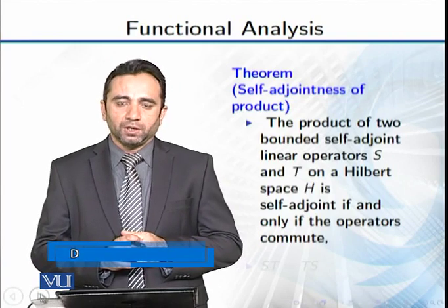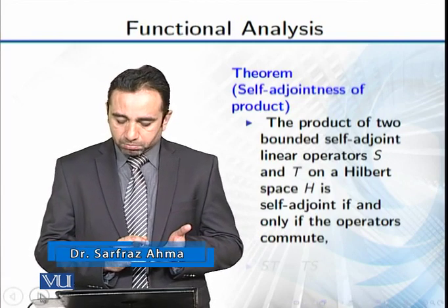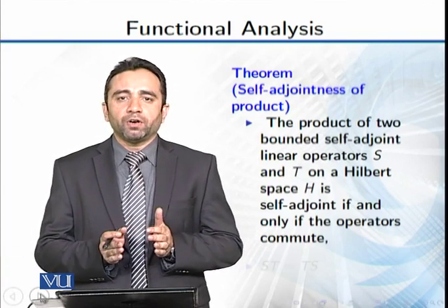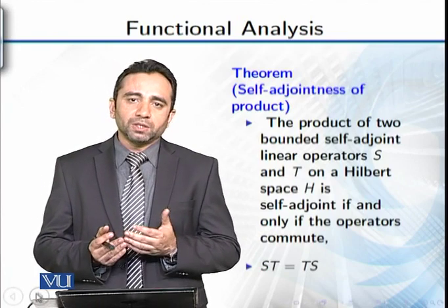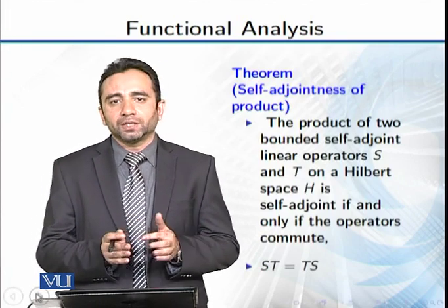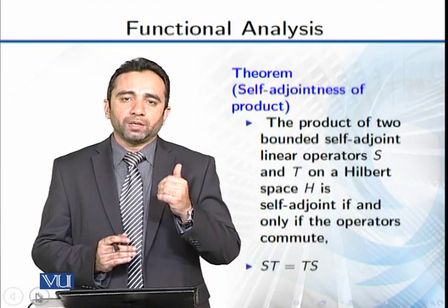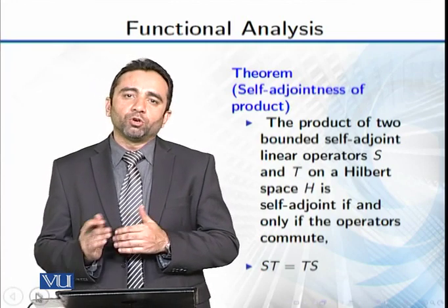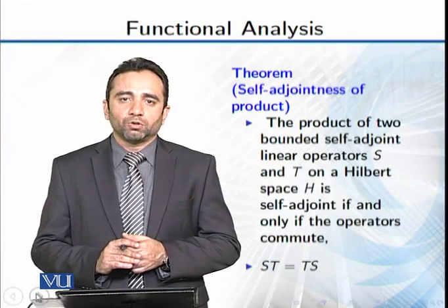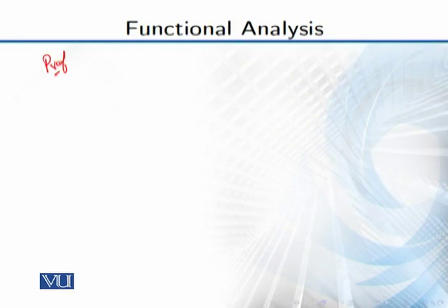یہ if and only if کی condition ہے — یعنی کہ آپ کے پاس جو operators ہیں وہ self-adjoint ہوں گے۔ The product of two operators self-adjoint ہوگا if and only if وہ operators commute کریں — that means ST is equal to TS۔ اگر وہ commute کرتے ہیں تو ان کا product self-adjoint ہوگا، اگر نہیں کرتے تو product self-adjoint نہیں ہوگا۔ ہم پہلے suppose کریں گے کہ product self-adjoint ہے اور proof کریں گے کہ وہ commute کرتے ہیں، پھر conversely commute suppose کر کے proof کریں گے کہ product self-adjoint ہے۔